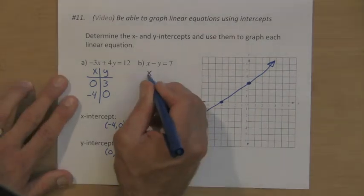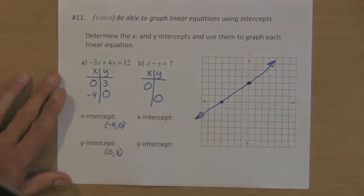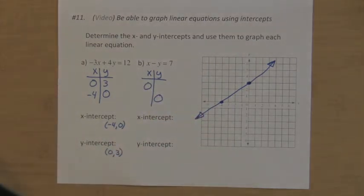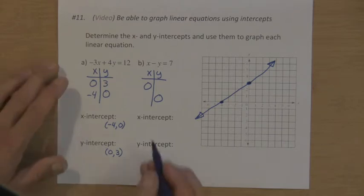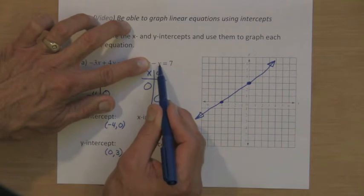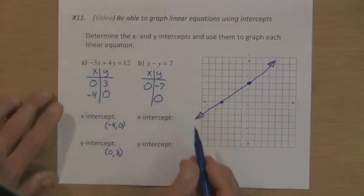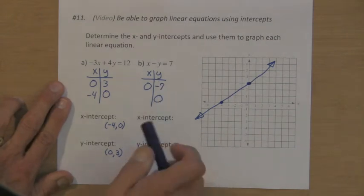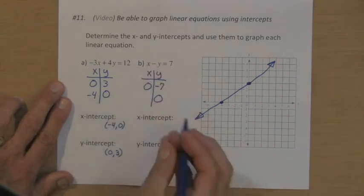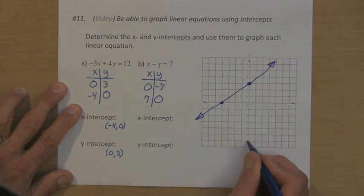Last one: if I make an xy table and I just want to find intercepts — x and y — so zero for x and zero for y, and find the missing values. If x is zero, that's putting a zero right here, so the opposite of some number y is seven, so that y value has to be negative seven. If y is zero, that's taking x minus zero, which is like saying x is the same as seven, so there's my missing value. Zero, negative seven is here — this is negative six and we're counting by one, so this is negative seven.